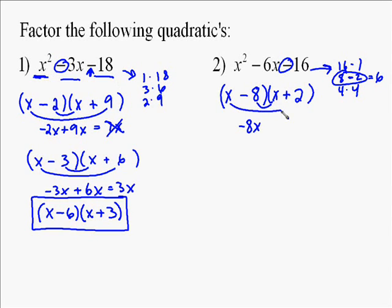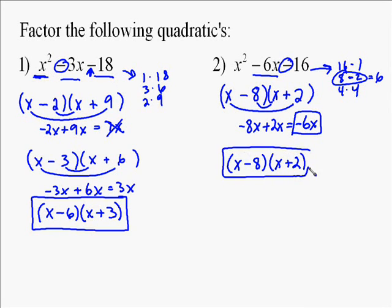So negative 8 times x is negative 8x. x times 2 is a positive 2x. And so negative 8x plus 2x is our negative 6x, which is that middle term. So now we know confidently that x minus 8 times x plus 2 is equal to x squared minus 6x minus 16. So that is the factorization of that problem.